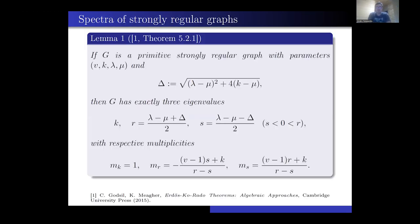This lemma describes the spectrum of a strongly regular graph. If g is a primitive strongly regular graph with parameters v, k, lambda, mu, we can calculate the spectrum just using these parameters. We have three different eigenvalues: k, r, and s, where r is positive and s is negative, and their respective multiplicities m_k, m_r, and m_s — you can see the formulas on the screen.